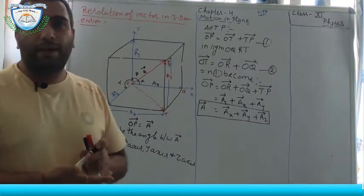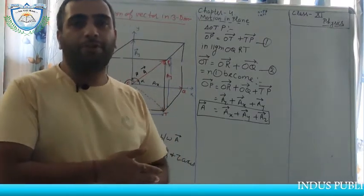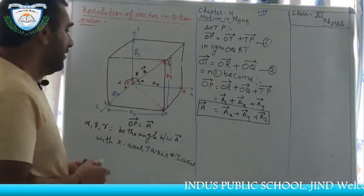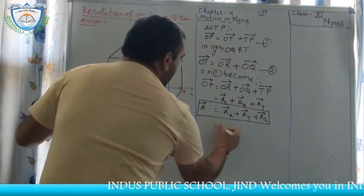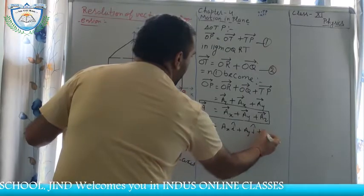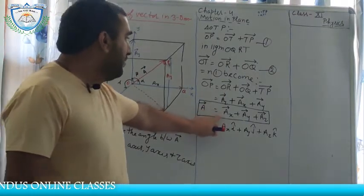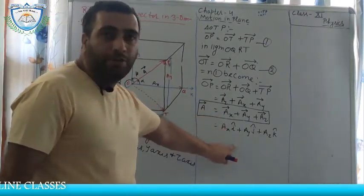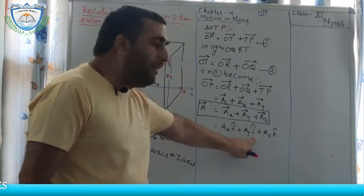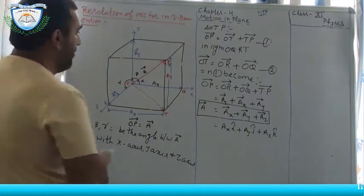To form vector A, we add Ax + Ay + Az. To break vector A into three components, the components are Ax, Ay, and Az. This can also be written as Ax·î + Ay·ĵ + Az·k̂, using orthogonal unit vectors — magnitude along x-axis times î, plus magnitude along y-axis times ĵ, plus magnitude along z-axis times k̂.